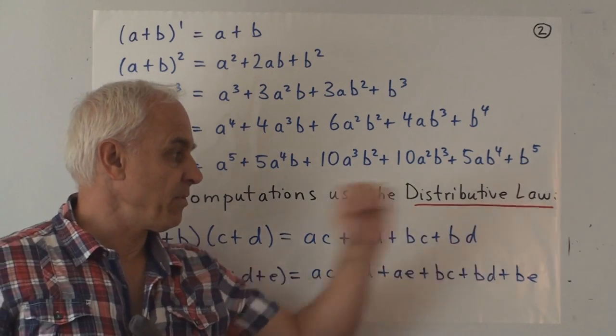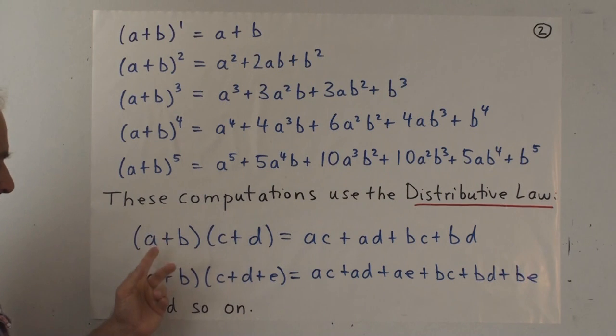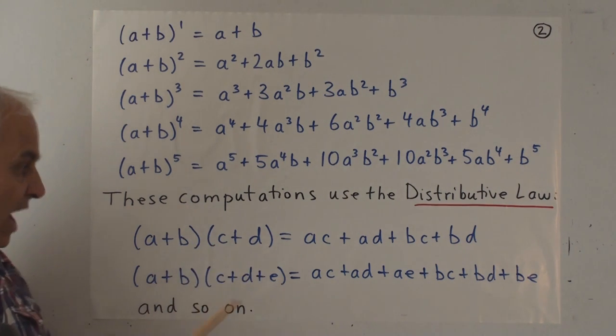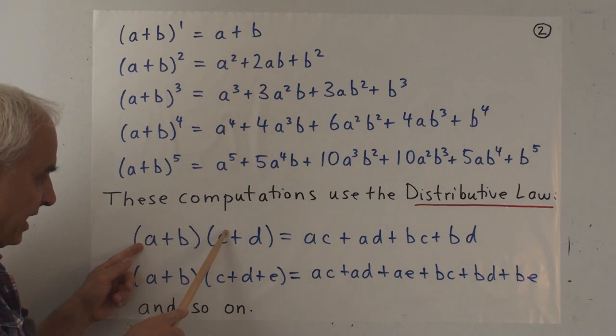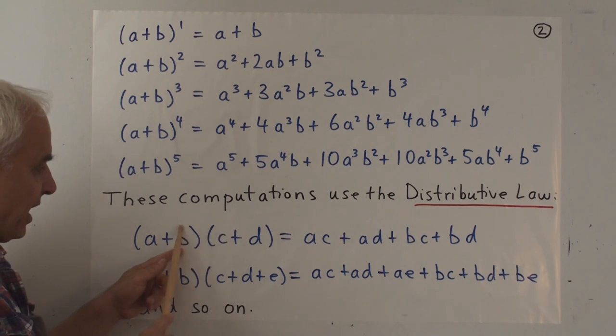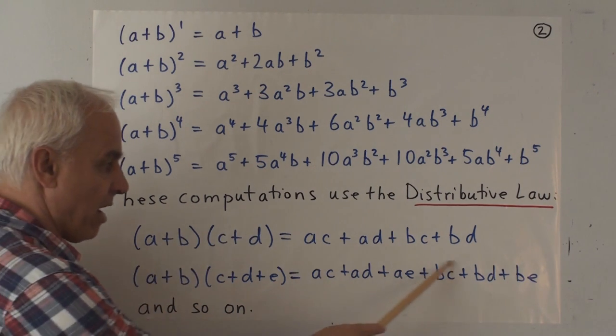These computations these days are relatively simple with our algebraic notation and the use of the distributive law. The distributive law, say in this form here, is that when you multiply something of the form a plus b with something else of the form c plus d, you have to get four different terms. You have to multiply the a times the c, the a times the d, the b times the c, and the b times the d, and add them all up.